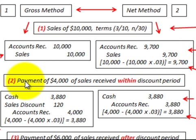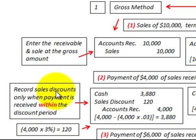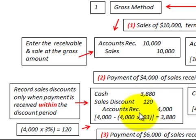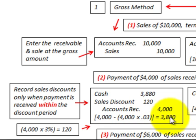Now let's look at a payment of four thousand dollars received within the discount period. With the gross method, sales discounts are recorded only when payment is received within the discount period. The four thousand dollar payment times three percent equals one hundred twenty dollars discount. Subtracting the discount gives us three thousand eight hundred eighty dollars. We increase cash by thirty-eight eighty, recognize a sales discount of one hundred twenty dollars, and reduce accounts receivable by four thousand dollars.